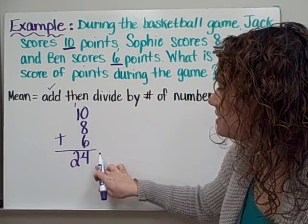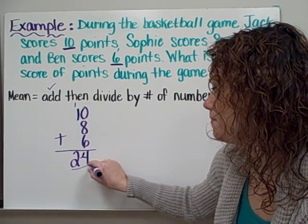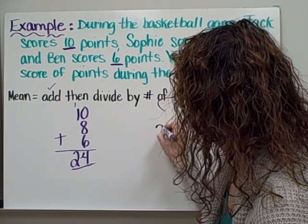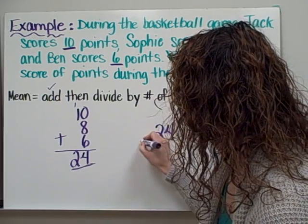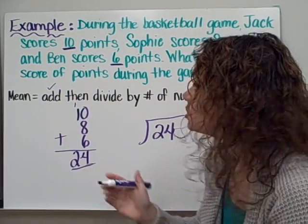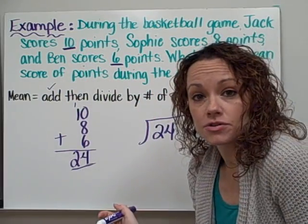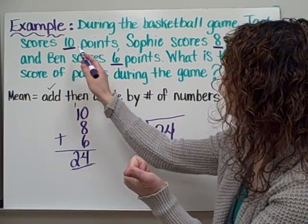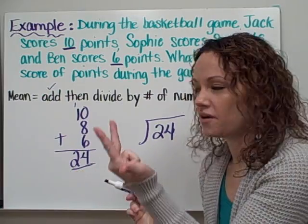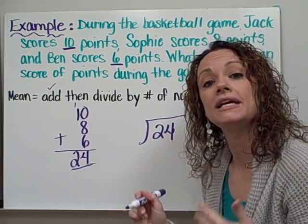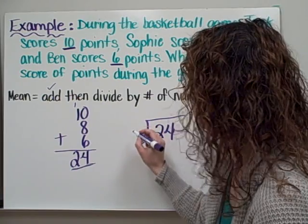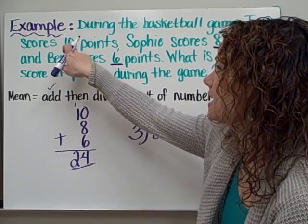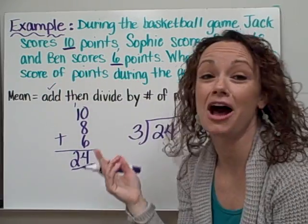Now I move to step two: divide this number by the amount of numbers that were given to me. I need to take 24 and create a division problem. I ask myself, how many sets of numbers were in the problem? We have Jack's score of 10, Sophie's score of 8, and Ben's score of 6 — that's 3 people, or 3 scores. So I'm going to divide my sum, 24, by 3 because I have 3 separate sets of numbers.